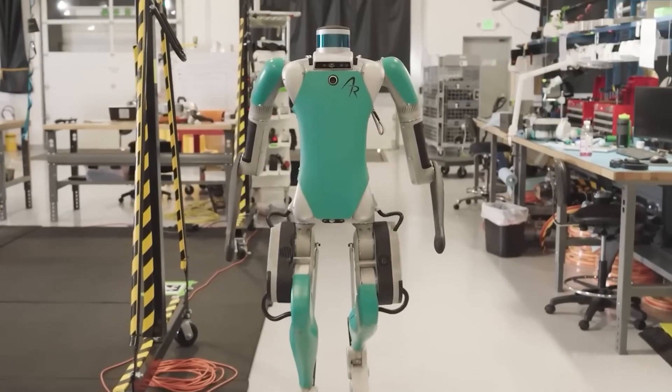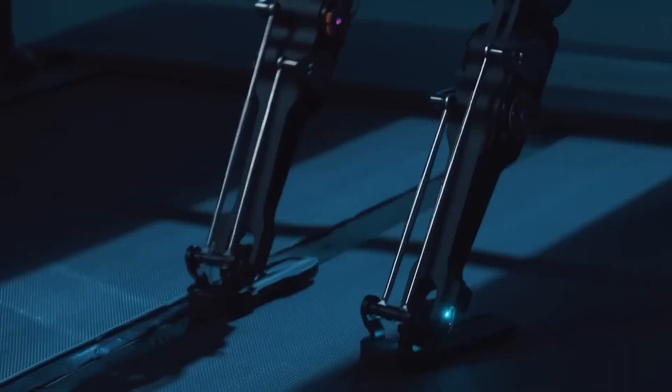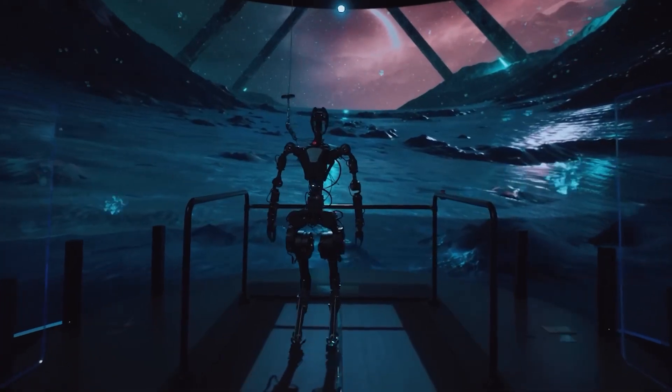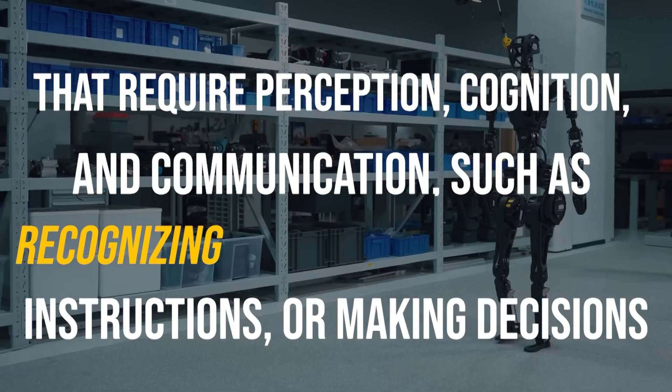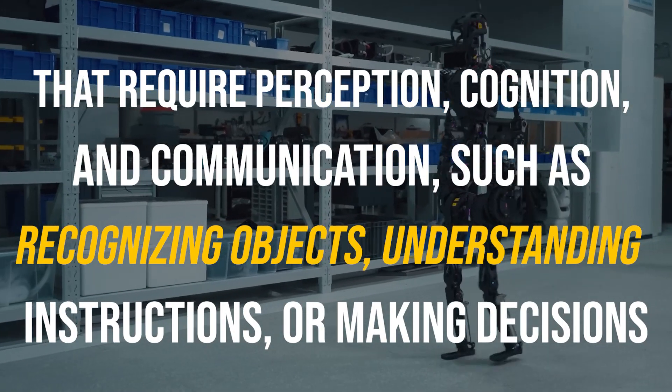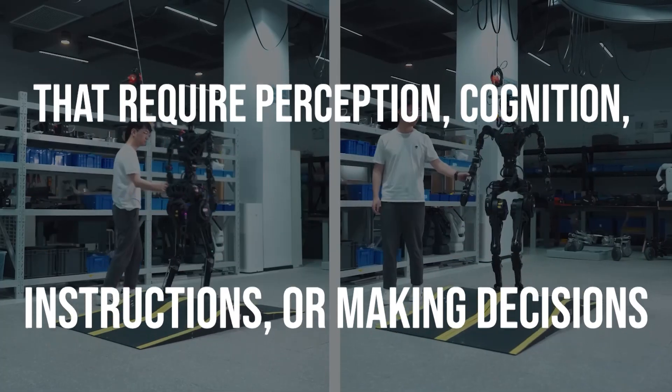GR1 can also use natural language processing, another branch of AI that enables machines to understand and generate natural language to converse with humans. GR1's AI-powered brain allows it to perform tasks that require perception, cognition, and communication, such as recognizing objects, understanding instructions, or making decisions.